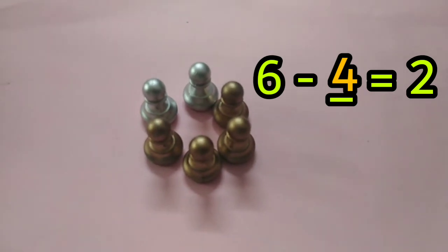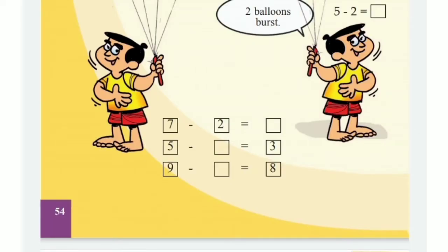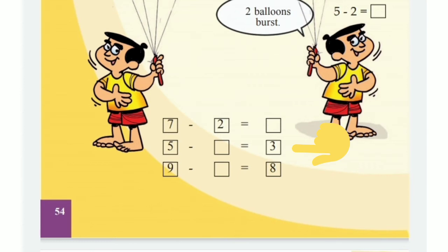Okay, let's come back to our page. All of you look here — there are some questions. 7 minus 2 is equal to how many? We will write 7 minus 2. All of you will write the answer here. Then look at the second one: 5 minus dash is equal to 3. 5 minus dash is equal to 3. Now we will write about 5 — 5 minus 2 is equal to 3.